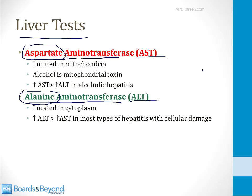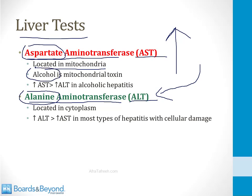In the biochemistry section, I talk about exactly what these enzymes do on a biochemical level. But for our purposes here, what you need to know is that you can measure the level of these enzymes in the plasma of patients, and the level increases when there's damage to the liver for any reason. AST is located in the mitochondria, and alcohol is a mitochondrial toxin. Therefore, in alcoholic hepatitis, you will see levels of AST that are much higher than the levels of ALT, because the primary focus of the toxin is in the mitochondria where you find AST.